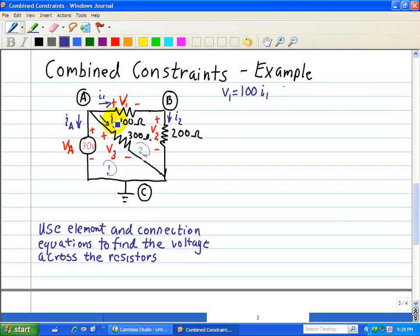So for V1, we use the Ohm's Law, our element constraints, where it's I1 times 100 ohms. V2 is I2 times 200 ohms.